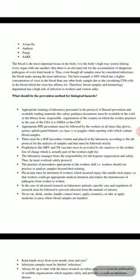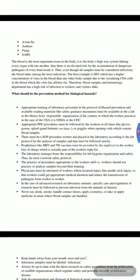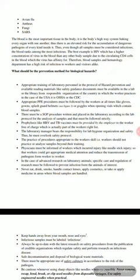What are the prevention methods for biological hazards? Appropriate training of laboratory personnel in hazard prevention protocols must be provided, and available reading materials like safety guidance documents must be available in the lab or library from the responsible regulatory organization. Appropriate PPE procedures must be followed at all times — including gloves, gowns, splash guard, or goggles when opening vials containing blood samples. A written SOP must be placed in the laboratory and followed strictly.